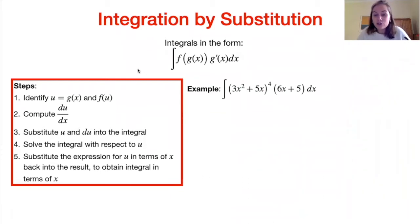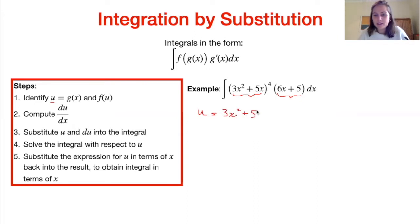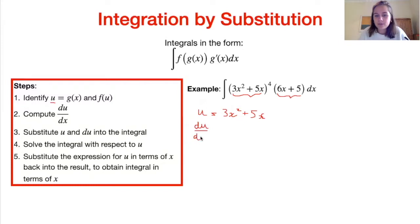Let's look at an example. We've got the integral of (3x² + 5x)⁴ times (6x + 5) dx. We need to pick out a function and its derivative. We see that 6x + 5 is actually the derivative of 3x² + 5x — so that's a good starting point. Following our method, u is equal to 3x² + 5x, and our function f of u is (3x² + 5x)⁴. The second step is to compute the derivative of u with respect to x: du/dx, using our differentiation rules, is 6x + 5.